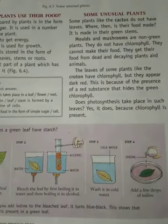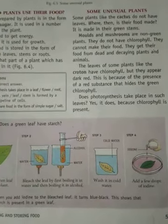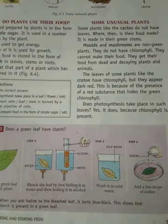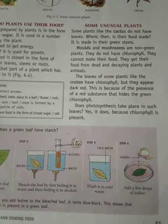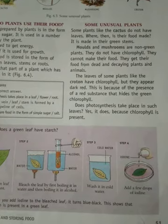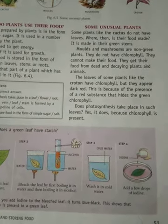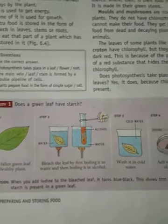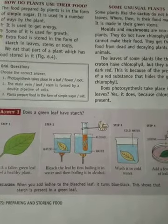Step 3: Then you have to make it cold — that means you have to put that leaf out from the alcohol and place it inside a cold water basin or cold water beaker. After that, in the fourth step, you have to put some iodine solution on that leaf. If you add a few drops of iodine, you will come to a conclusion: when you add iodine to the bleached leaf, it turns blue-black.